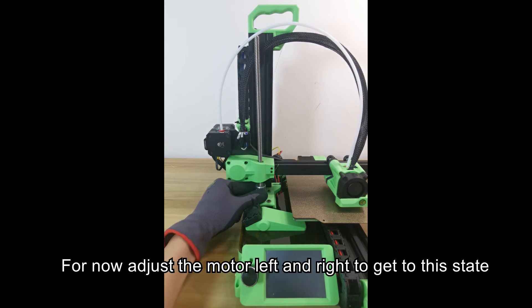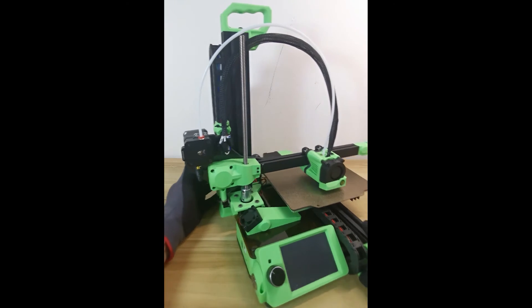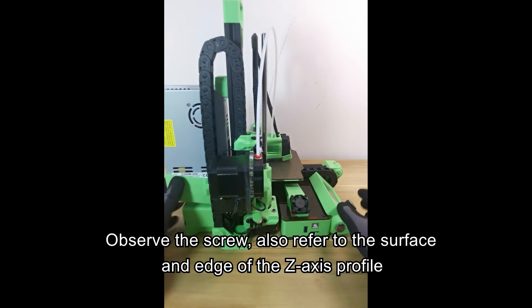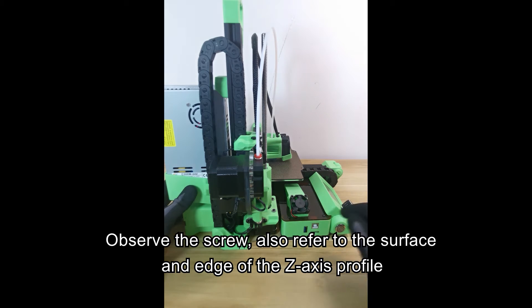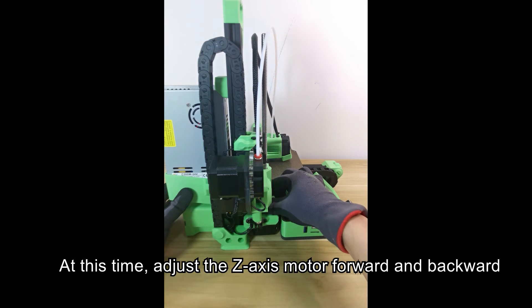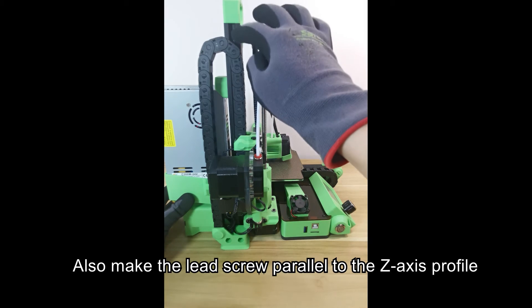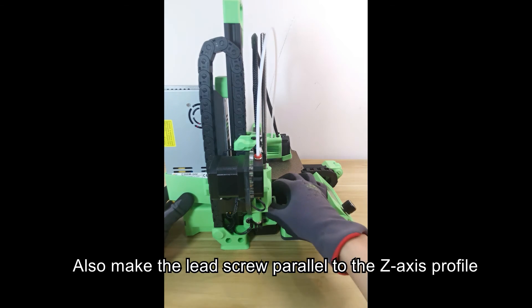For now, adjust the motor left and right to get to this state, then turn the printer to the side. Observe the screw, also referring to the surface and edge of the Z-axis profile. At this time, adjust the Z-axis motor forward and backward, also making the lead screw parallel to the Z-axis profile.